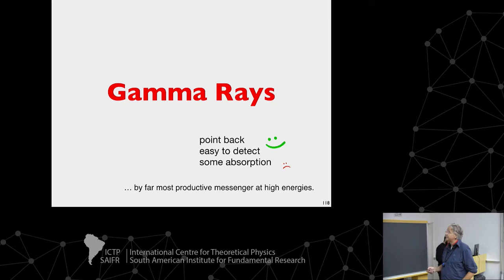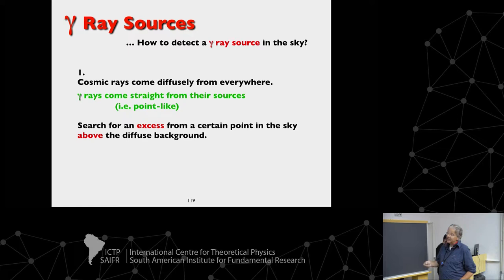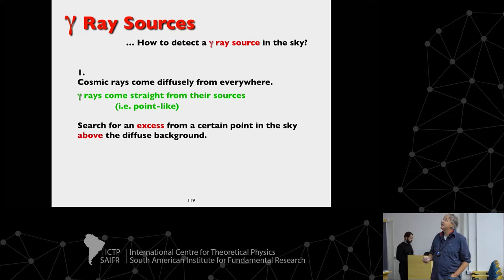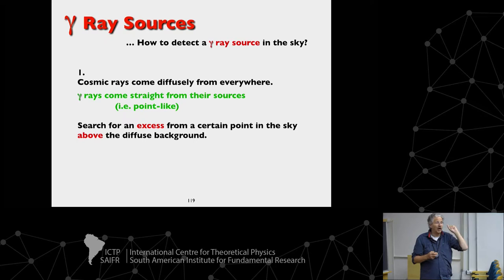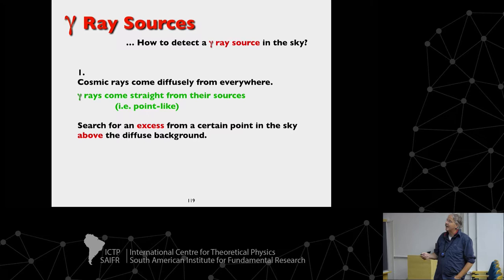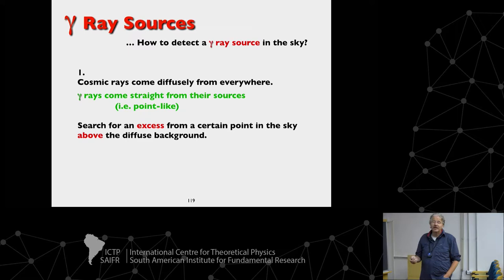So the question is now: how do you detect gamma ray sources in the sky? There are two ways of doing that. Cosmic rays come diffusely from everywhere, so wherever you look, you get the same number of cosmic rays. If, for some reason, from one direction in the sky we have more events above this diffuse background, we can say there must be a source sending particles directly to us, always from the same position. We search for an excess from a certain point in the sky above the diffuse background made by cosmic rays. Even for strong gamma ray sources, the cosmic ray background is typically 1,000 to 10,000 times more than the photons.